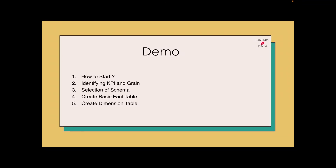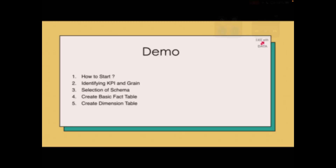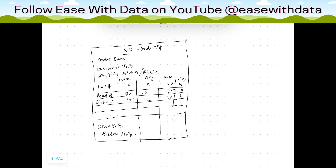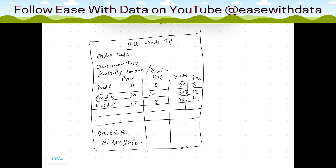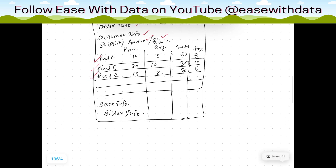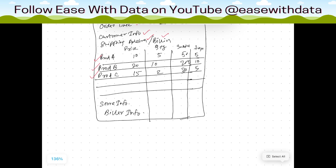Today we are going into a demo to understand how do we design fact and dimension tables, what are measures, what are attributes, and how do we differentiate and design our facts and dimensions. Consider this is a billing invoice. The information we have includes order ID, order date, customer info like customer ID and customer name, shipping address, billing address, and product line items. For example, product A with price 10, quantity 5, subtotal 50, and tax 5 rupees.